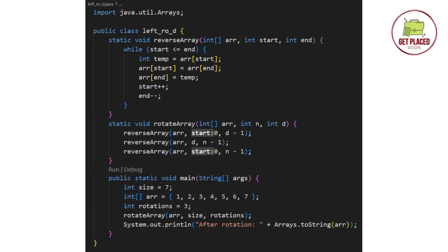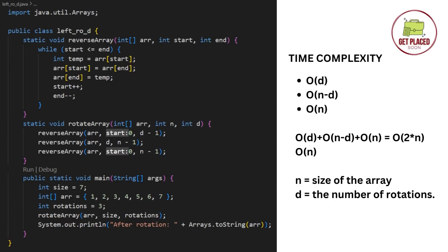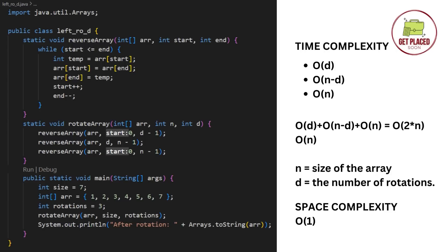For the time complexity of this approach: the first reversal is O(d), the second is O(n minus d), and the third is O(n), giving a total of O(2n), which simplifies to O(n). For space complexity, we are doing everything in-place on the given array without creating any extra space, so space complexity is O(1) — constant. We have successfully reduced the space complexity compared to the previous approach. Thanks for watching — please like, share, and subscribe.